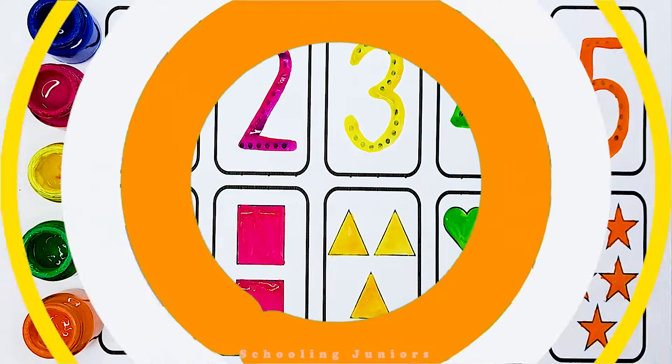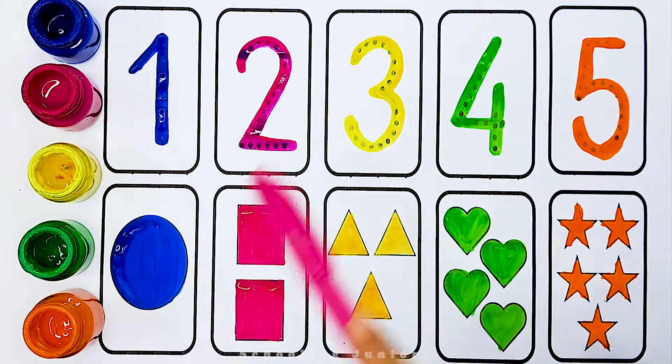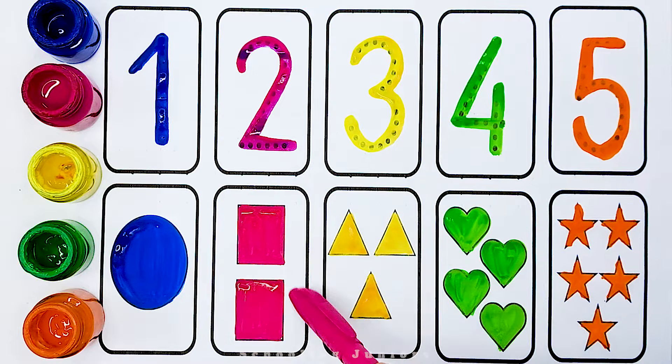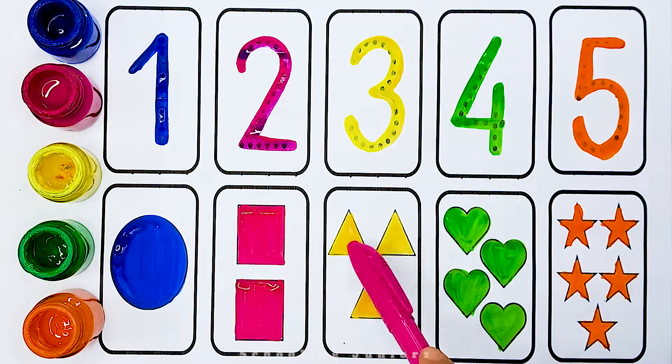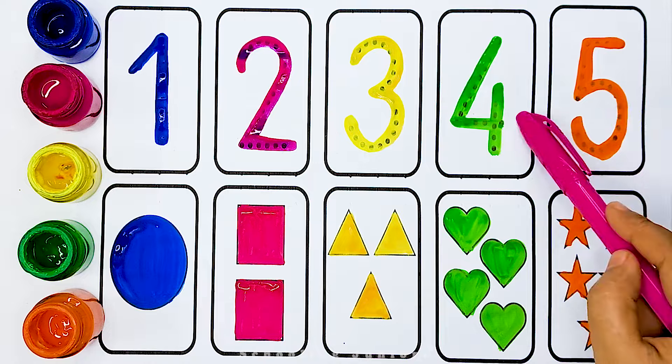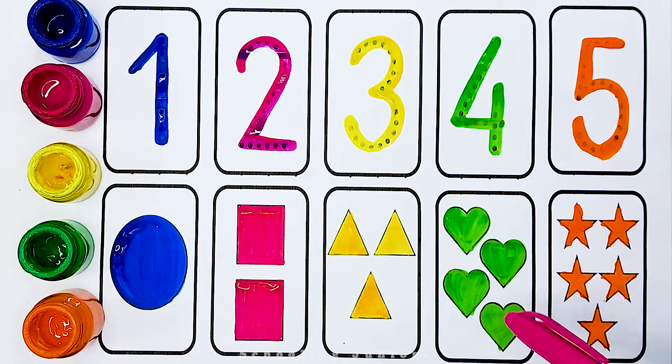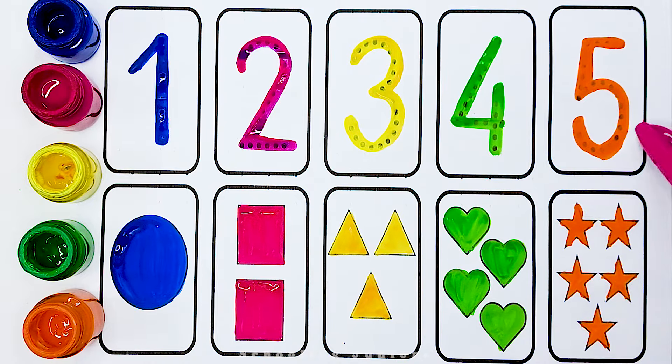Heart one. Circle two. One two. Square three. One two three. Triangle four. One two three four. Heart five. One two three four five. Star.